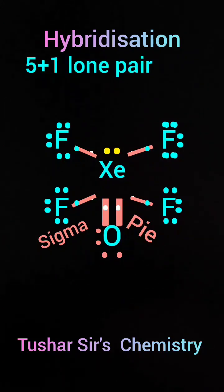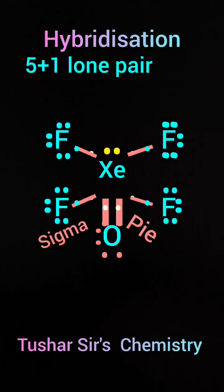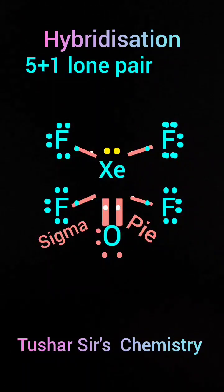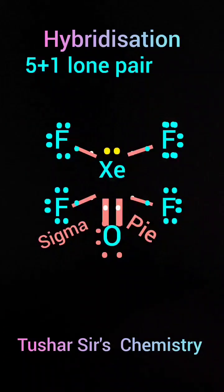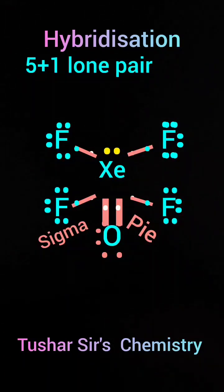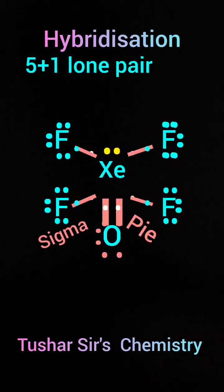And xenon has not formed any coordinate bond over here. So the trick is: number of sigma bonds plus number of lone pairs plus number of coordinate bonds. If it is equal to two, then sp; three, sp2; four, sp3; five, sp3d; six, sp3d2.